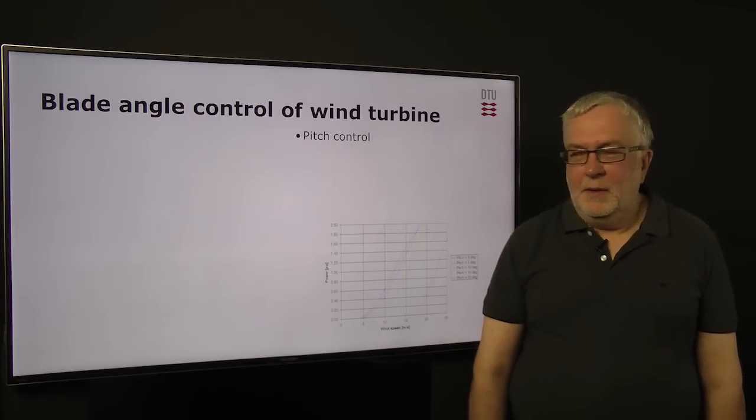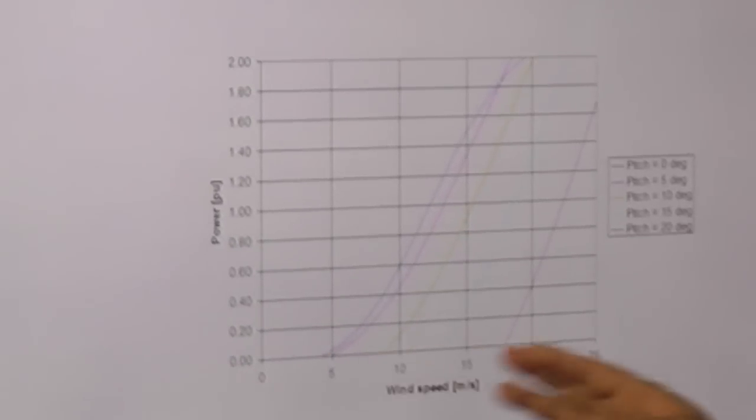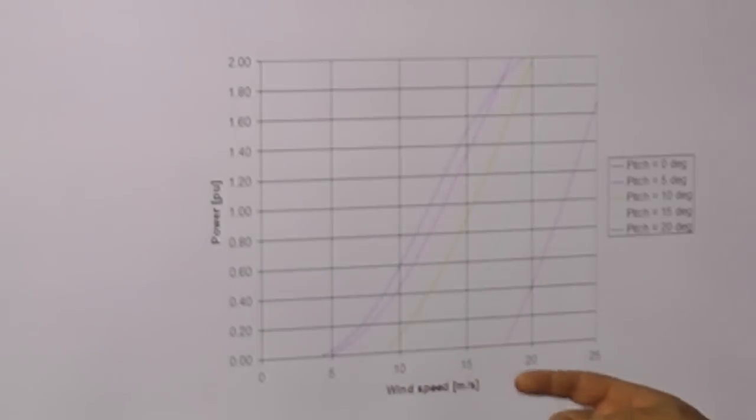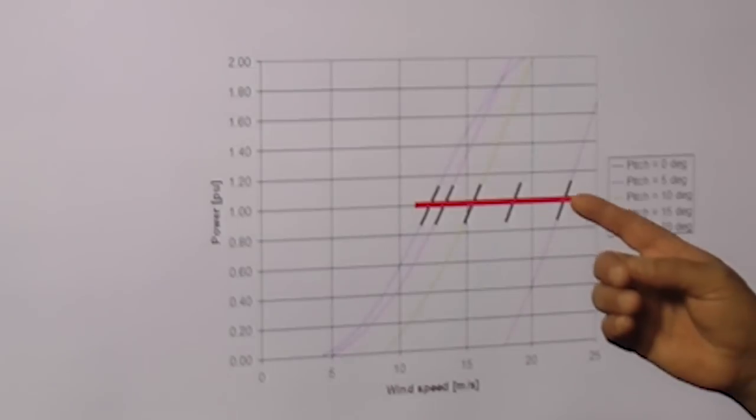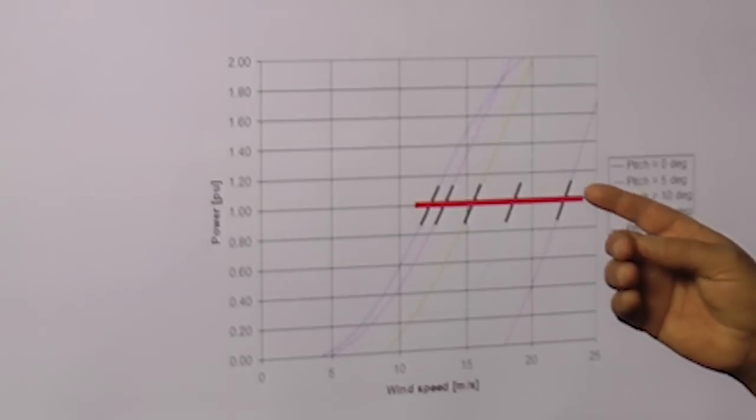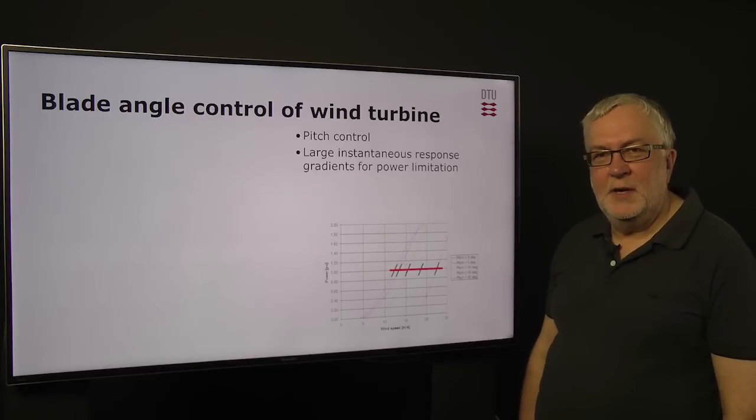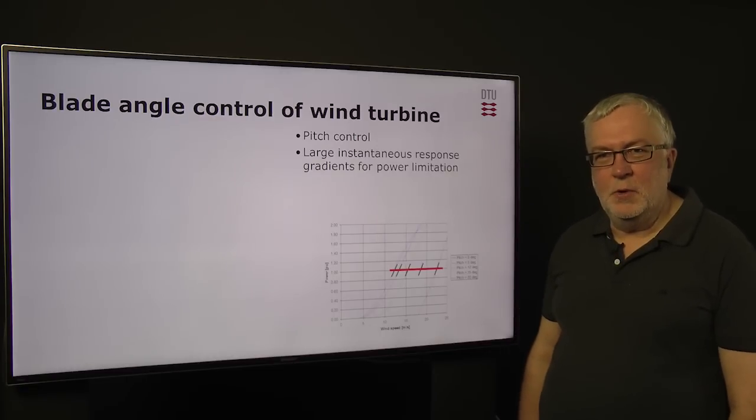Now, the graph shows for different pitch angles on the blade how the power output will vary depending on the wind speed. And what we see is if we are in the area where we want to limit the power, then having a small change in the wind speed can give us a very high change in the power, which means that we need to have a very fast control in order to avoid too high torques.